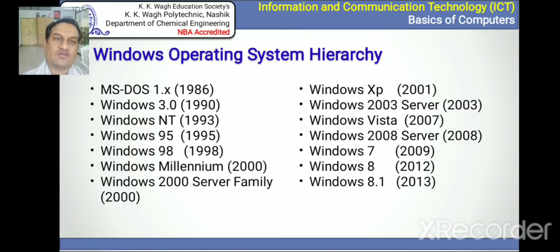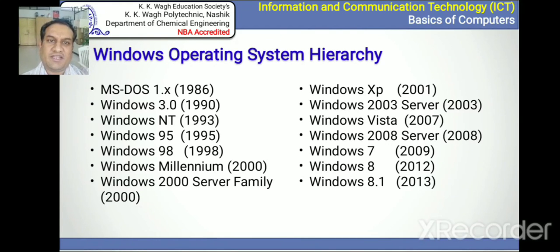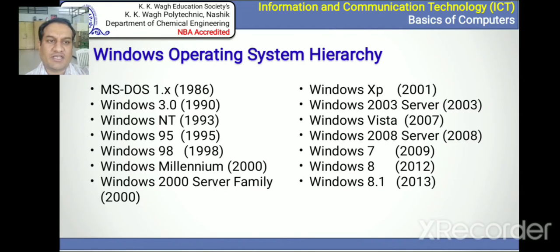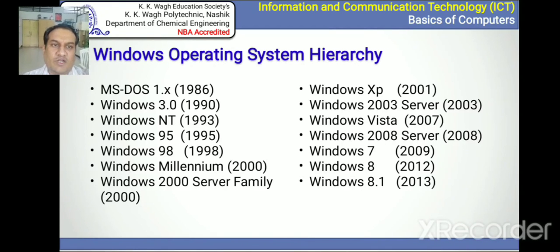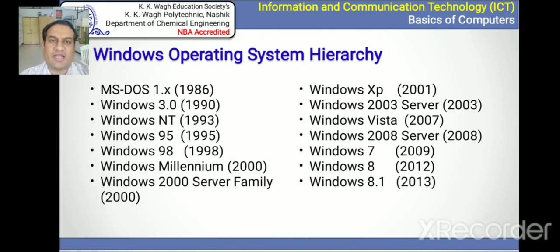The Windows operating system hierarchy: in 1986 there was MS-DOS, then versions in 1990, 1993, 1995, 1998, and similarly up through today with Windows 7, 8, and 8.1 — and newer versions are also coming.